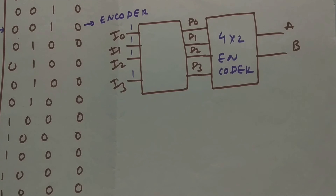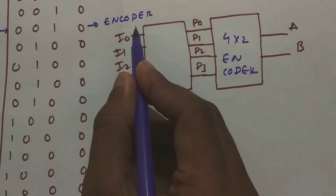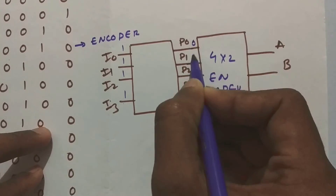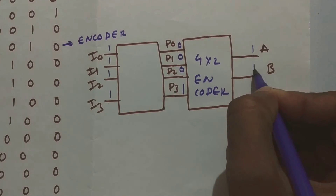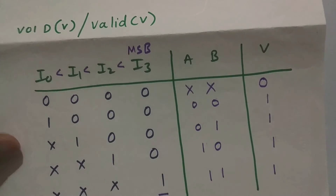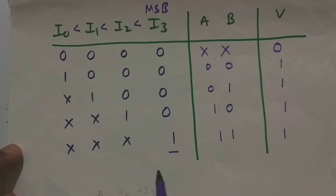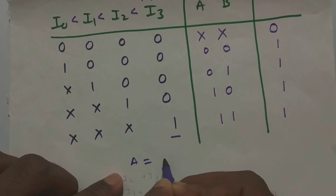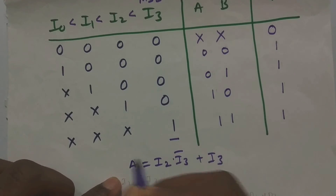Whatever input from zero to fifteen is given, it is converted into priority values P3, P2, P1, and P0, then passed to the 4×2 encoder. For example, if the input is one one one one (all four inputs high), since we are doing MSB priority it considers only I3 and sets the rest to zero — giving P output zero zero zero one — so the final output is one one. Now let's come back to the truth table and write the equations. A is high when I2 or I3 is active, so A equals I2·I3̄ plus I3.